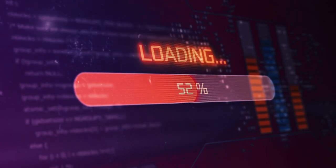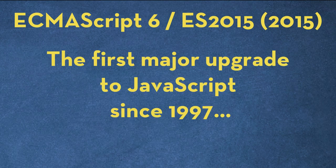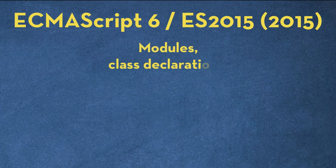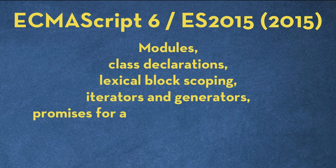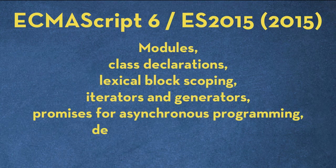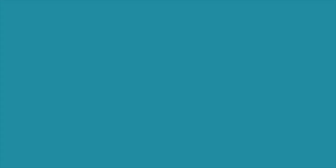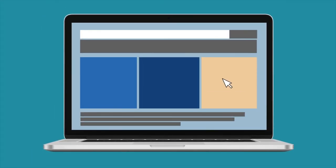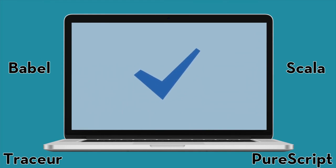ES6 was released in 2015 and is the first major upgrade to JavaScript since 1997. It included many new things such as modules, class declarations, lexical block scoping, iterators and generators, promises for asynchronous programming, destructuring patterns, and proper tail calls. It took many years for most browsers to fully support everything, and transpilers were a great help to accommodate the latest ES6 updates across all browsers.